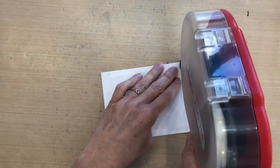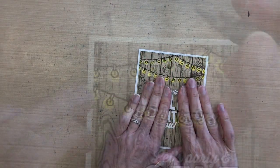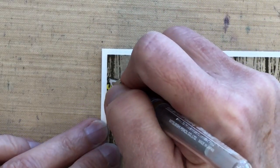I'm gonna add some ATG tape runner to the back of this panel and adhere it to a piece of Neenah Solar White cardstock which is my card base and that way I get a white outline that coordinates with the white sentiment.